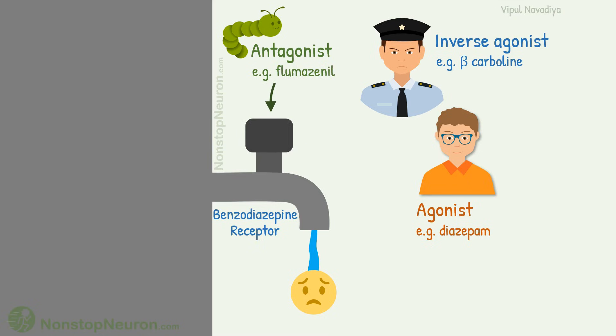Flumazenil is antagonist. It prevents activity of both diazepam and beta-carboline. As long as it stays there, neither diazepam can produce sedation nor beta-carboline can produce convulsions.